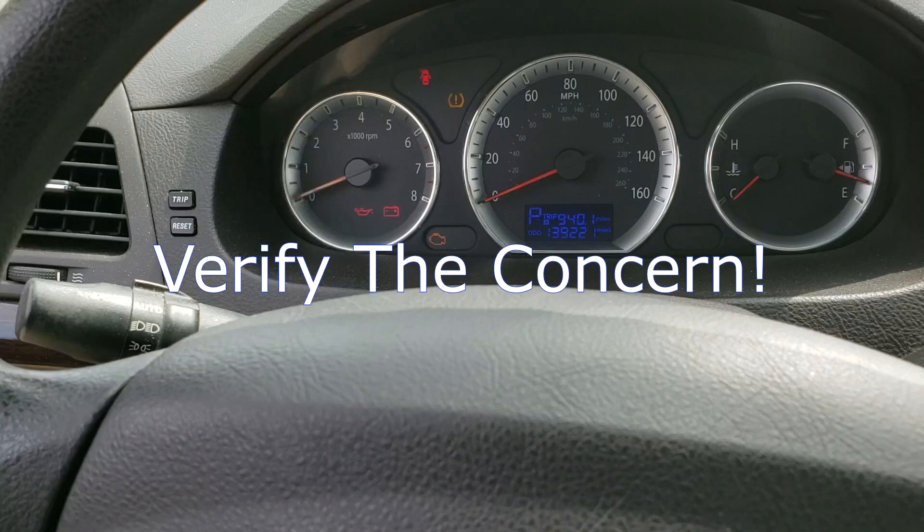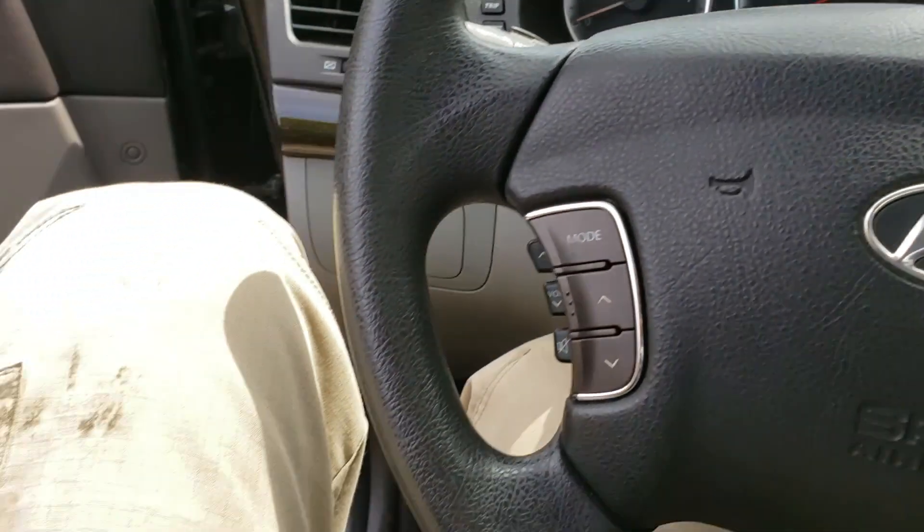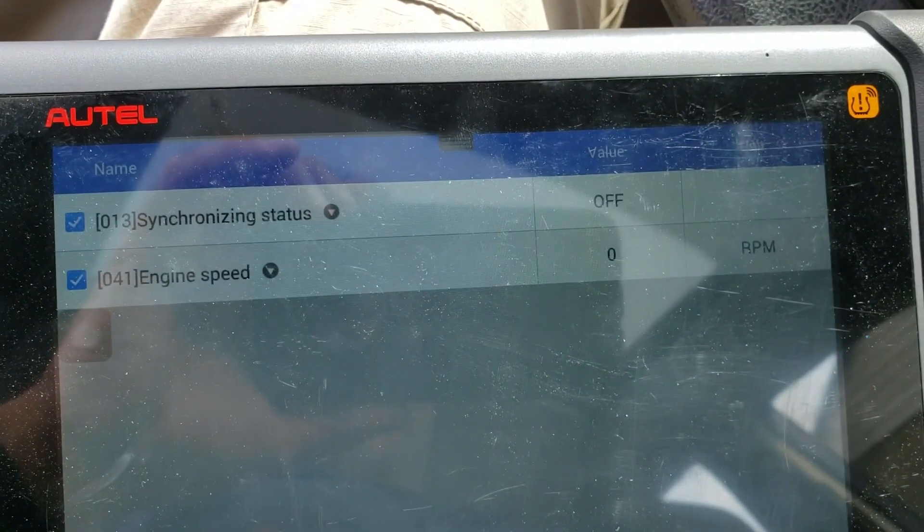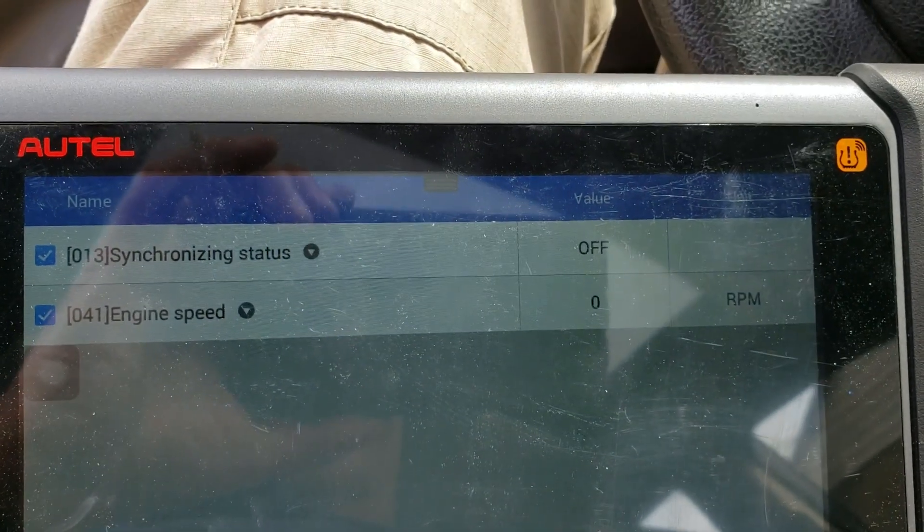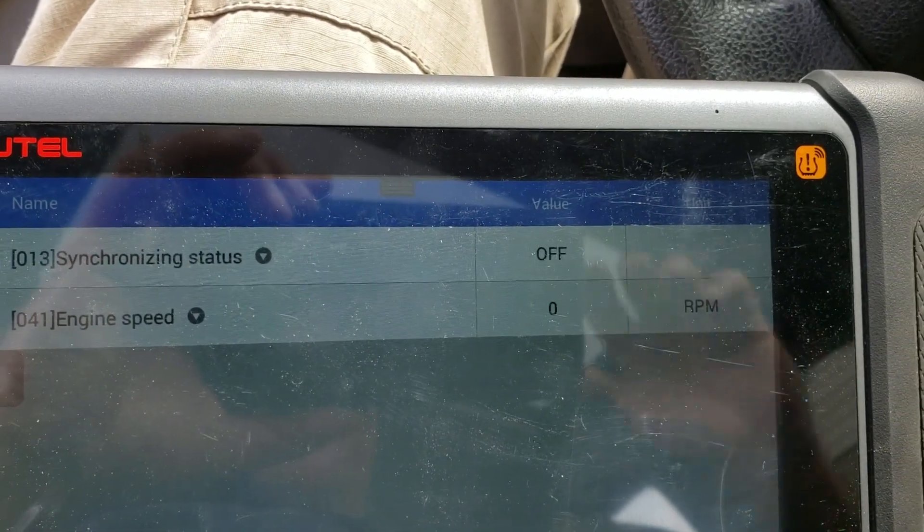The first thing we always want to do is verify the customer complaint. This was a crank no start. I put my scan tool on there to check DTCs, there were none. And also I wanted to check for cranking RPM. We got crank no start on this 2009 Hyundai Sonata, does not sound healthy. We do have cranking RPM.